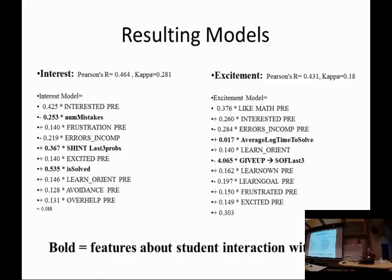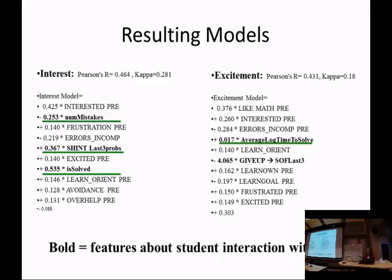We've been looking at what correlates with student interest and excitement in our behavioral model. With interest, the number of mistakes goes down and the number of hints requested goes up. With excitement, students solved problems and the average log time to solve was very small — around 0.017 — and they did not give up (clicking past to the next problem). We're trying to perfect the model of what a student is doing when we think they're interested or excited.